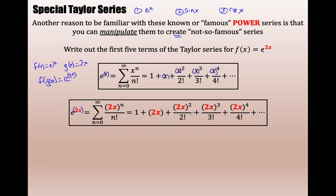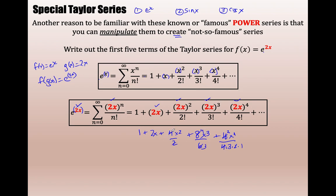Start with e to the x, then use composition. e to the x is not equal to e to the 2x, but you take e to the x and compose the function 2x into it. In algebra 1: if f of x equals e to the x and g of x equals 2x, then f composed with g is e to the 2x. Since e to the x is exactly equal to this infinite polynomial, just compose term by term. This would really be 1 plus 2x plus 4x squared over 2 (which reduces to 2x squared), plus 8x cubed over 6 (which reduces to 4/3 x cubed), plus 16x to the 4th over 24.